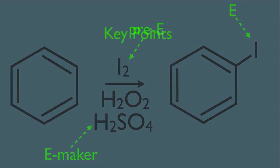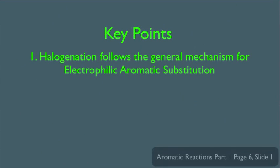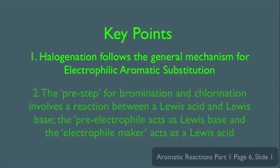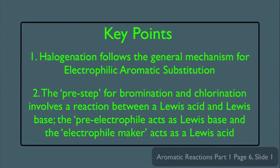What are our key points then? What we saw here was that halogenation follows the general mechanism for electrophilic aromatic substitution. And two, we saw the pre-step for bromination and chlorination involves a reaction between a Lewis acid and a Lewis base. The pre-electrophile acts as a Lewis base, and the electrophile maker acts as a Lewis acid.